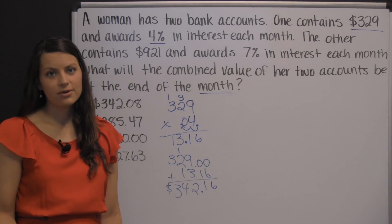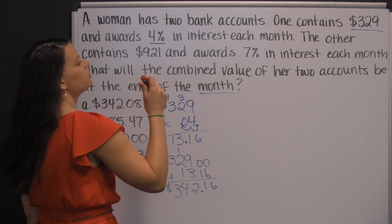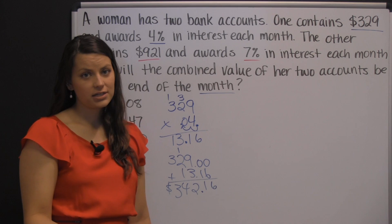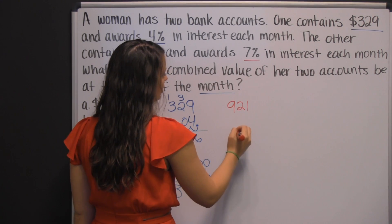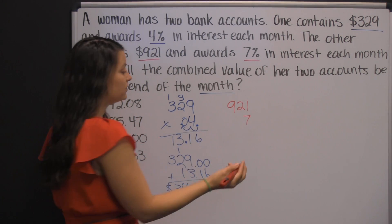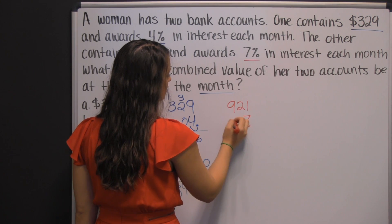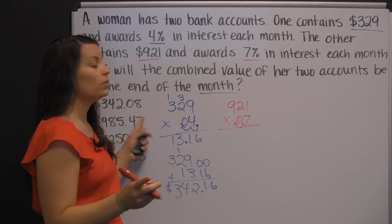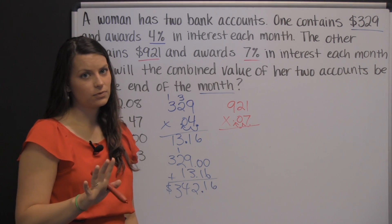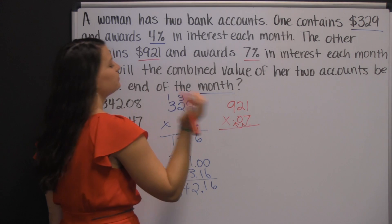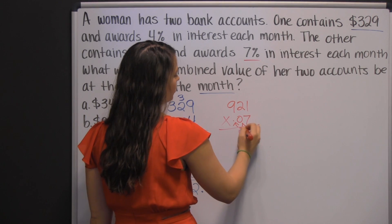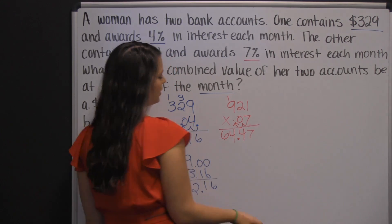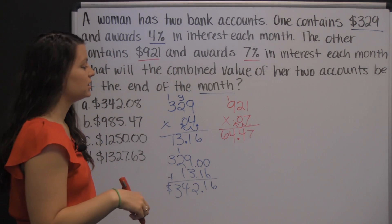We're going to do the same thing with account 2 — it's just that the numbers are a little different. In account 2, she had $921 and earned 7% in interest. To find the interest, multiply 921 times 7%, but just like the 4%, you have to change it into a decimal. Take this decimal, move it two places to the left, and it's seven hundredths. When we're multiplying with decimals, we don't line up the decimals — you deal with the decimals at the end in your product. 7 times 1 is 7, 7 times 2 is 14, 7 times 9 is 63, plus 1 is 64. Two numbers behind the decimal. So in her second account, she earned $64.47.